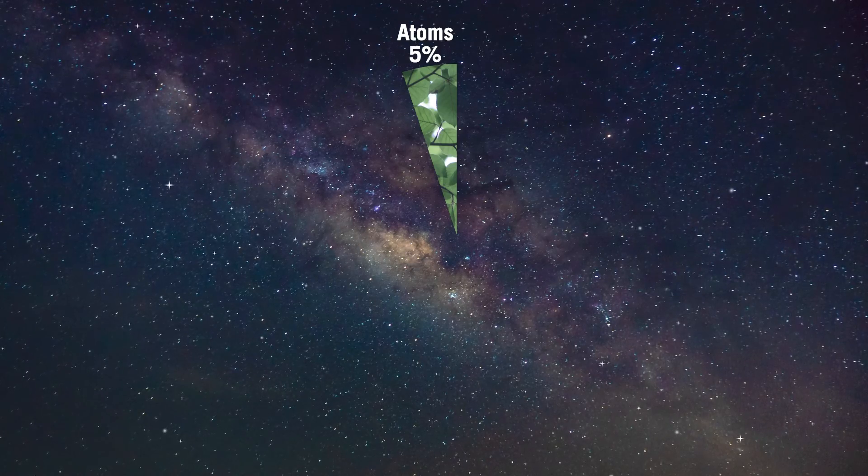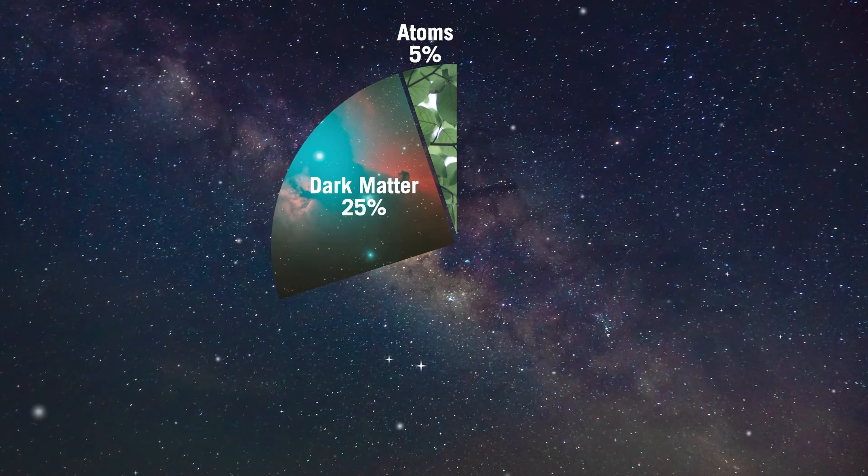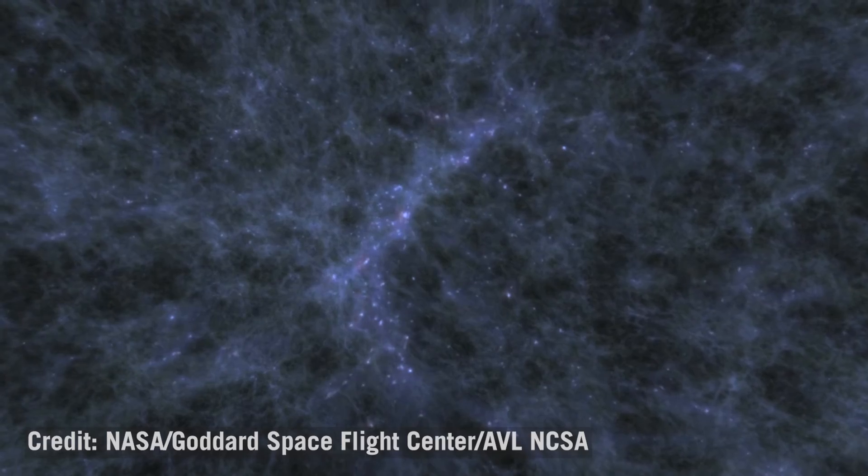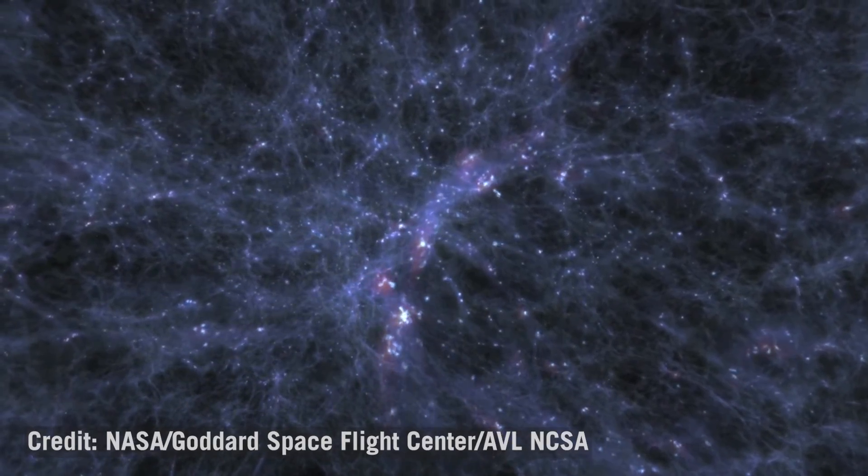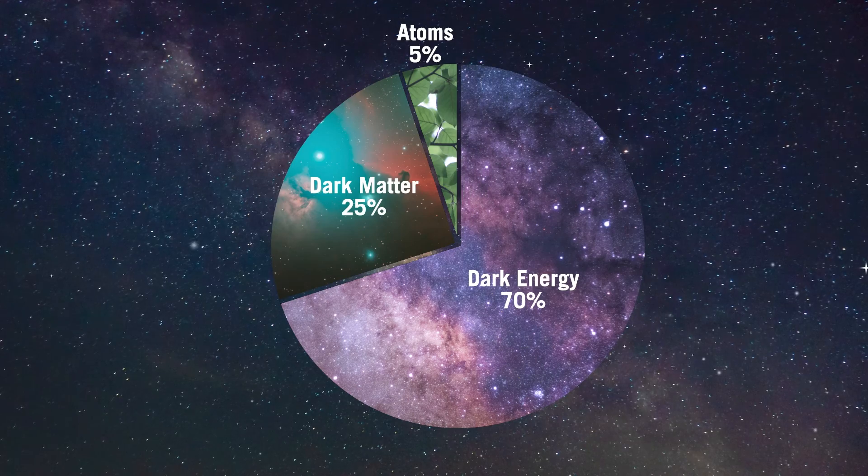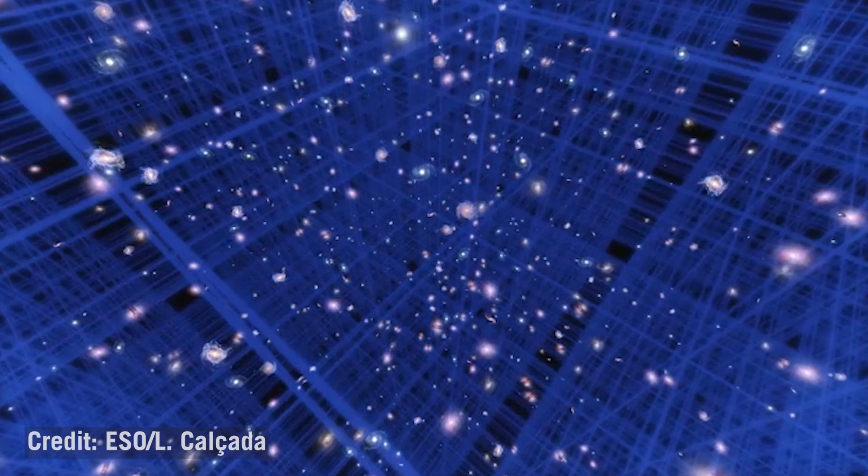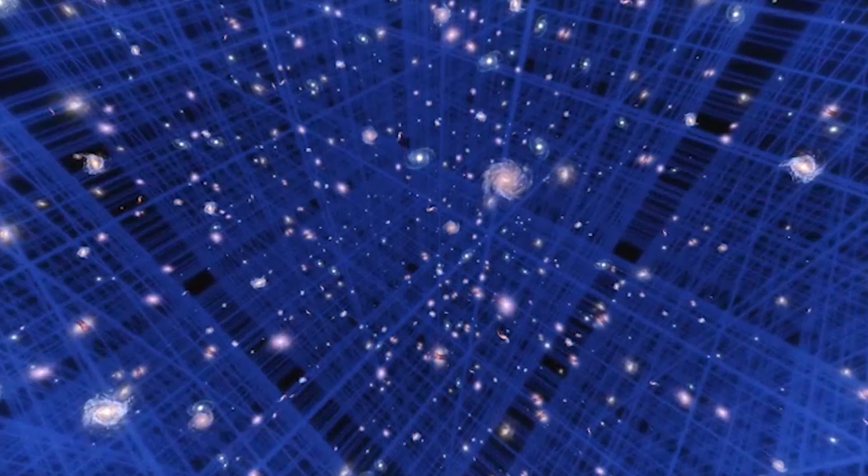It also tells us what the universe is made of. So by looking at the CMB, we've learned that only about 5% of the universe is made up of atoms. That's the stuff that we're made up of. That's the type of matter that we're most familiar with. That's only 5% of the universe. About 25% of the universe is dark matter. We don't really know what dark matter is. We know it's there. We can see its gravitational influence and it leaves a very distinct impression in the microwave background. And then 70% of the universe is made up of dark energy. This mysterious energy field that's pushing the universe apart and causing it to speed up as it expands. But some of our best measurements of those fractions, you know, 5% from atoms, 25% from dark matter, 70% from dark energy, we get from observations of the microwave background.